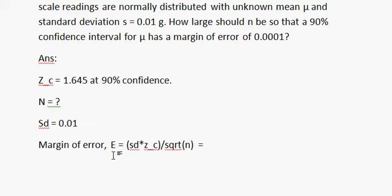Put the value of sd: 0.01 into 1.645 divided by square root of n. Now margin of error e has already given, which equals to 0.001.